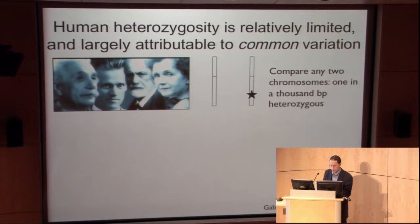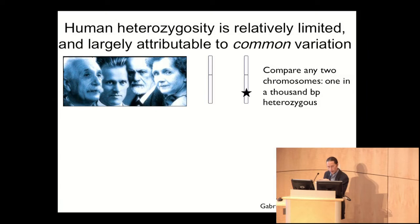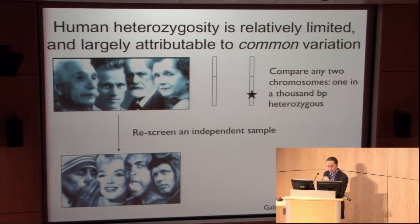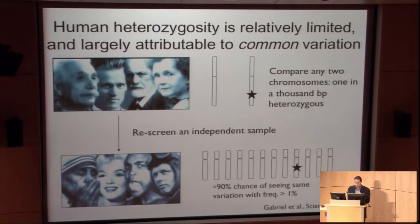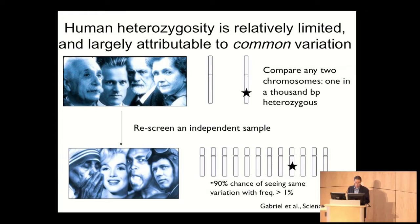When we compared two chromosomes — in work led by Stacy Gabriel and David Altshuler and others about 10 years ago — we began to recognize that there were differences in any two human chromosomes about once every thousand base pairs. Interestingly, most of the time those were not private mutations. The vast majority of the time, if we went and screened those variable sites in a larger panel of individuals, we'd find that it was a common site of DNA variation — a polymorphism where some people have an A and some people have a C, for example.